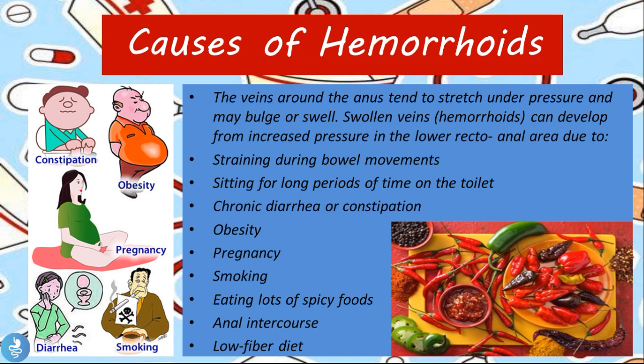The veins around the anus tend to stretch under pressure and may bulge or swell. Hemorrhoids can develop from increased pressure in the lower recto-anal area due to straining during bowel movements, sitting for long periods on the toilet, chronic diarrhea or constipation, obesity, pregnancy, smoking, eating lots of spicy foods, having anal intercourse, or having a low-fiber diet. All these conditions cause the veins within the anal-rectal canal to stretch, swell, bleed, and become sensitive and tender.